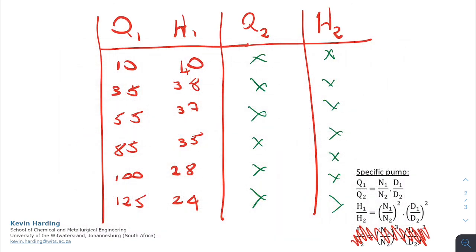Please just also be aware that you might get an example where we change both the speed, so the N value, as well as the diameter. So if this is the case, you'll need to take into account both the difference in the speed from N1 to N2 as well as the diameter from the different pumps.